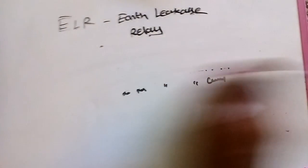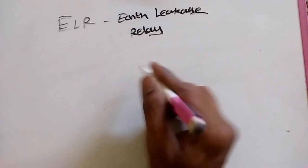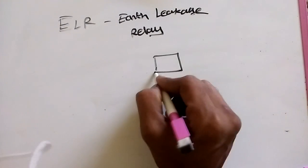First thing: ELR is going to trip the main supply. That means ELR is going to trip the circuit breaker. This one is the circuit breaker.